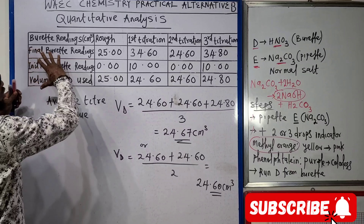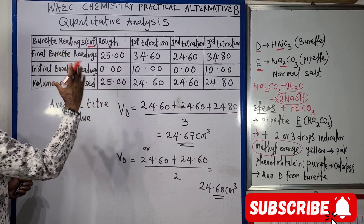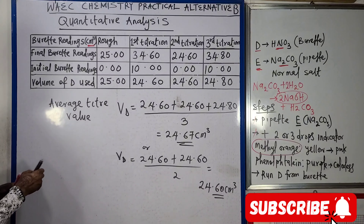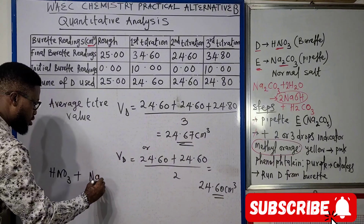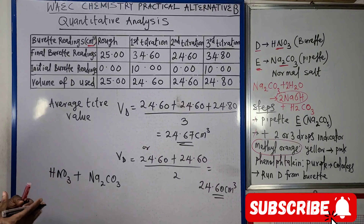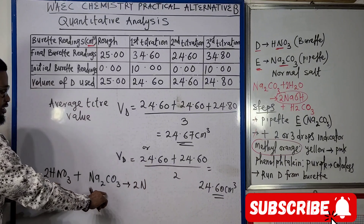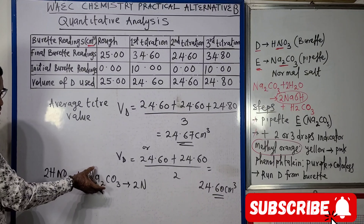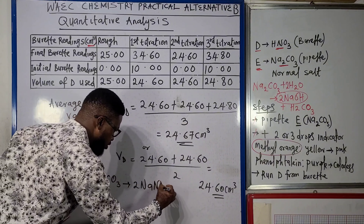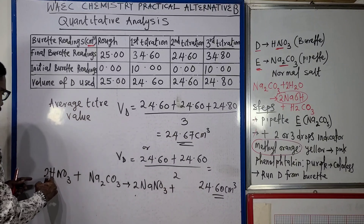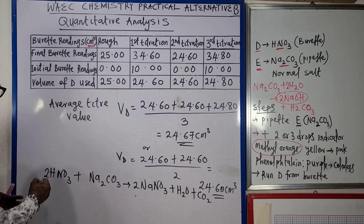After performing the experiment, your table should have readings in cm³ as the unit for everything on the table. Looking at the reaction: HNO3 reacting with sodium carbonate — it depends on the type of carbonate. For the anhydrous form (no water of crystallization): 2HNO3 + Na2CO3 → 2NaNO3 + H2O + CO2.